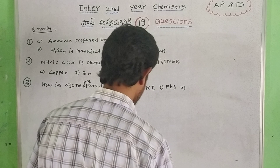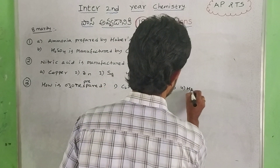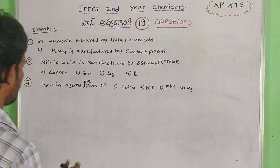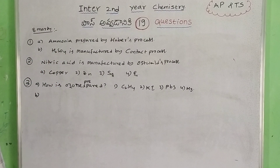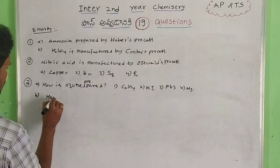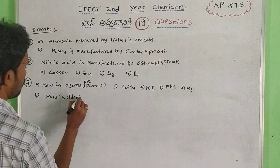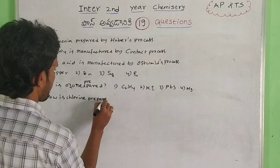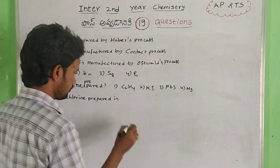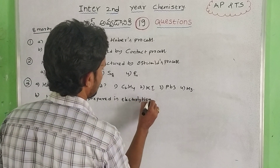Fourth one: lead sulfide. Next, mercury (Hg). So here we go — direct four marks. Then chlorine: prepared by electrolytic method.